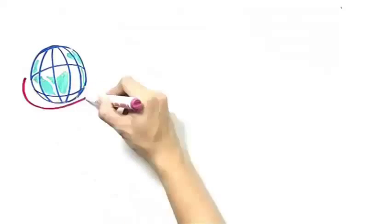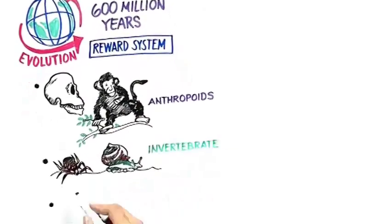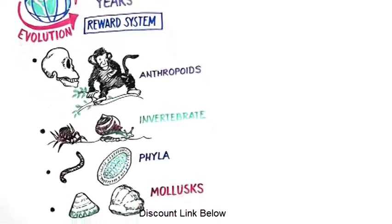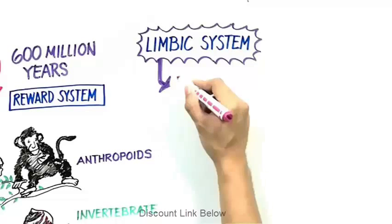And from an evolutionary standpoint, this reward system goes back 600 million years before rational thought. This reward system was found in anthropoids, invertebrate phyla, and molluscs. The limbic system is also very necessary for survival.